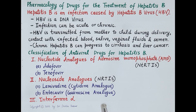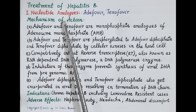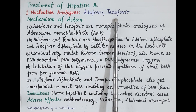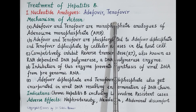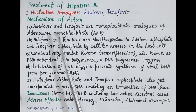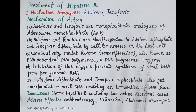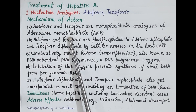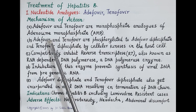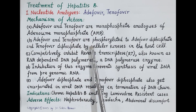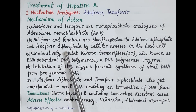The first category of antiviral drugs for treatment of hepatitis B are the nucleotide analogues — adefovir and tenofovir. These drugs inhibit replication of hepatitis B virus by preventing synthesis of viral DNA. Adenosine monophosphate is a nucleotide, and adefovir and tenofovir are monophosphate analogues of adenosine monophosphate, meaning their structure resembles the nucleotide adenosine monophosphate. Both drugs are administered orally and are then phosphorylated to adefovir diphosphate and tenofovir diphosphate by cellular kinases present in the host cell.